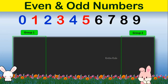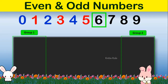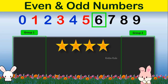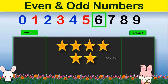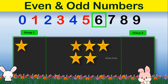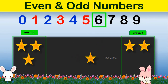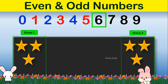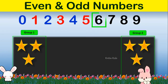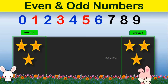The next number is number 6. Here you can see when we divide 6 between 2 groups we have equal number of items in each group, meaning number 6 is an even number.